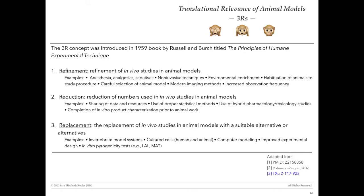I'd like to briefly introduce the concept of the Three R's — also not on my radar until the FDA put it there. The concept was first introduced in 1959 in a book called The Principles of Humane Experimental Technique. The first R is Refinement — refining in vivo studies and animal models. The second R is Reduction — reducing the number of animal models used. The third R is Replacement — actually replacing animal studies with a suitable alternative. I've provided examples of each of the Three R's on this slide.